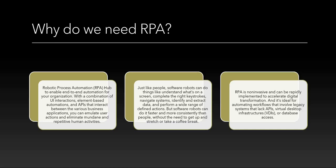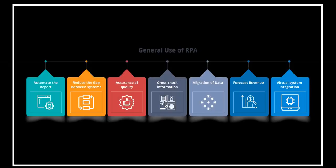Some general uses of RPA: they can automate reports — for example, if you have to send a report every week on Monday at 9 a.m., they can go in, read the database using a predefined query, create a report in Excel, and send it to the intended recipient. They also reduce the gap between different systems, making it easier to interact with different types of systems by imitating how humans would.